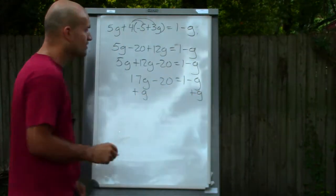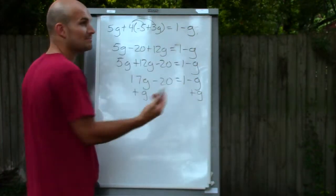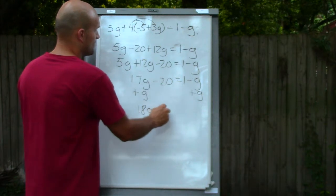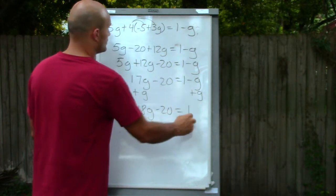Now it's so important for me to add this g on both sides that I'm keeping the problem the exact same. So therefore I have 18g minus 20 equals 1.